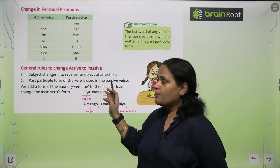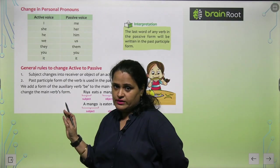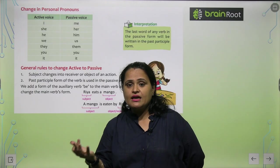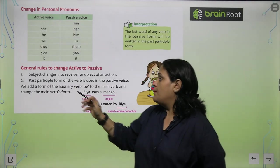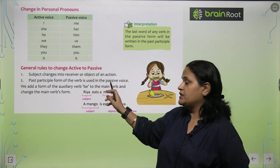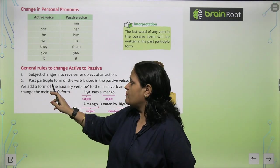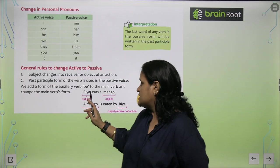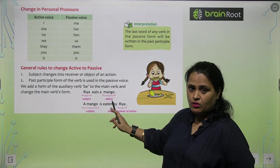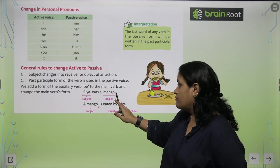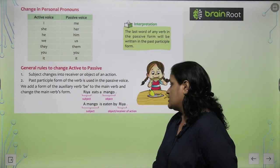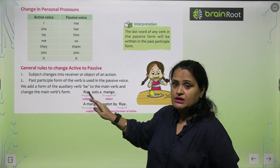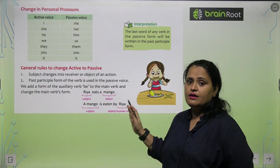Now the general rule to change Active to Passive: Subject changes into Receiver and the Object of an Action. Past Participle form of the verb is used in Passive Voice. We add a form of the auxiliary verb BE to the main verb. For example, 'Riya eats a mango' — Riya is the subject and mango is the object. Jab hum ise Passive voice mein change karte hain: 'Mango is eaten by Riya' — Riya becomes the Receiver and mango becomes the subject.